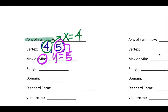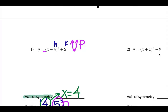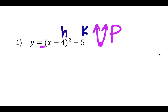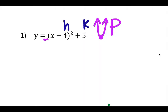I know I've got a minimum because it's facing up at y equals 5. Range is going to be y is greater than or equal to 5, because it's facing upward — everything's got to be greater than that lowest point. Domain is always all real numbers. Now for standard form, I'm going to take this equation and solve it.